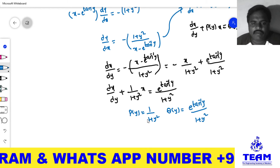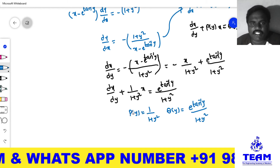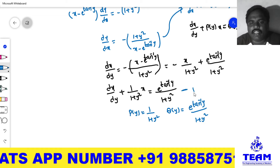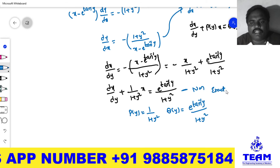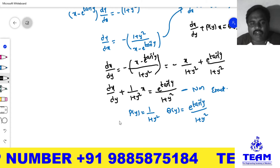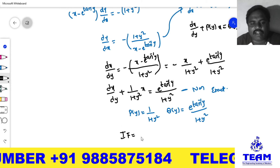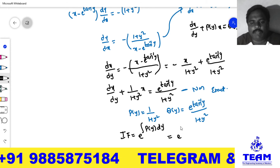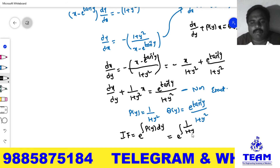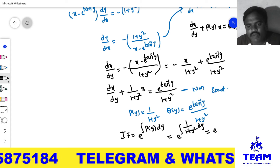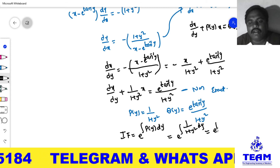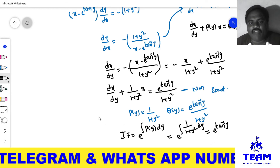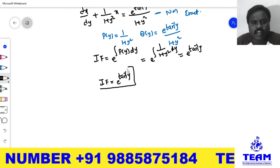Now we need to find the integrating factor. Since this linear differential equation is non-exact, we must make it exact by finding the integrating factor. The integrating factor is e^(∫P(y) dy) = e^(∫ 1/(1 + y²) dy). Using the standard formula, ∫ 1/(1 + y²) dy = tan⁻¹y. Therefore, the integrating factor is e^(tan⁻¹y).